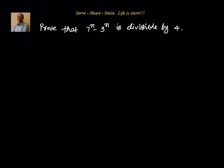Hello friends, welcome back. Let us look at this problem as part of mathematical induction. We have to prove that 7 to the power of n minus 3 to the power of n is divisible by 4 for all values of n which are natural numbers, where n belongs to natural numbers.